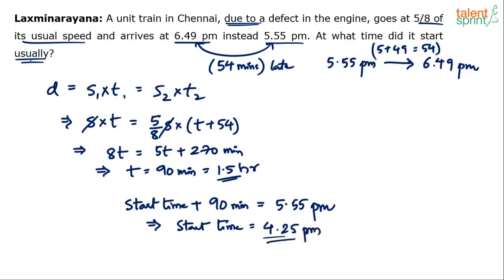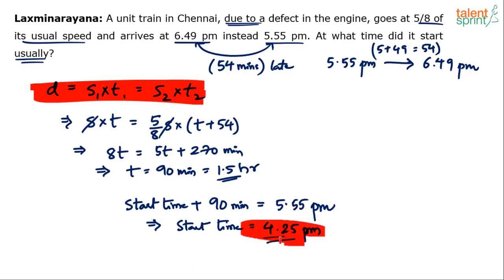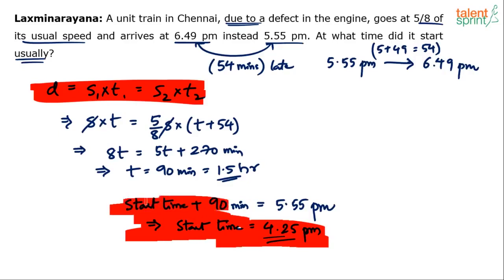Please do not go by the length of the explanation or the number of steps put here. Many of these steps are just for the sake of explanation. You can cut down all these steps. You should start with S₁ × T₁ equals S₂ × T₂, find out T, and then this is a mental calculation. You don't have to put this on paper. I've just written it here so that all of you can follow.